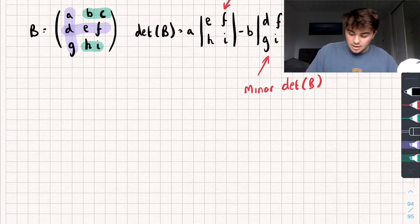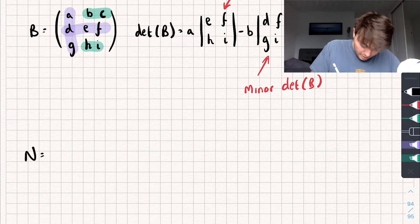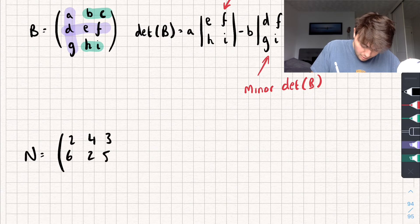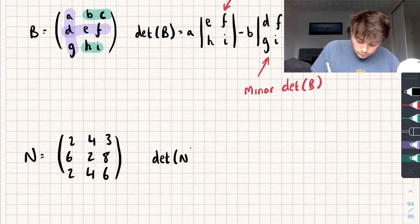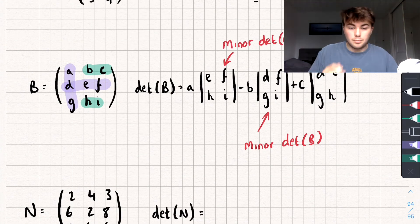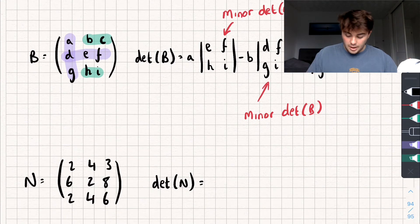So, let's have a look at an example. So, say we had the matrix N that we could write as 2, 4, 3, 6, 2, 8, and 2, 4, 6. And we want to find the determinant of N. So, I'm literally just going to use this formula up there, substitute everything in, and we'll see what we get.